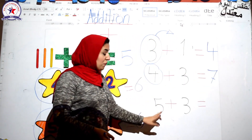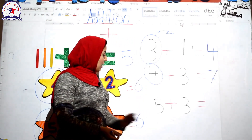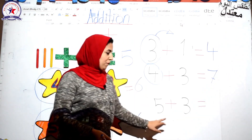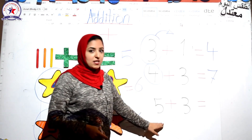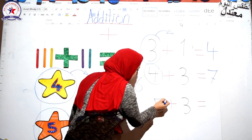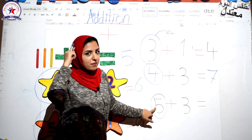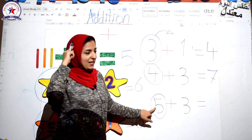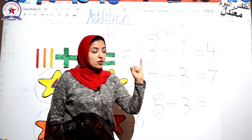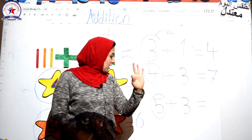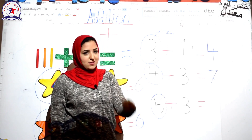Last one. Five plus three equal what? Which one is bigger, five or three? Let's do it by yourself. It's five — circle five. Put five in your head and put three on your fingers: one, two, three. Count after five: six, seven, eight.